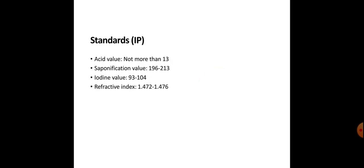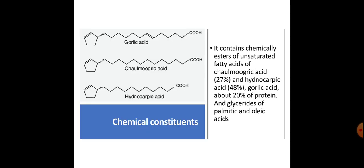It is slightly soluble in alcohol. Standards. Acid value: not more than 13. Saponification value: 196 to 213. Iodine value: 93 to 104. Refractive index: 1.472 to 1.476. Chemical constituents: it contains esters of unsaturated fatty acids — chaulmoogric acid 27%, hydnocarpic acid 48%, gorlic acid about 20%, protein and glycerides of palmitic and oleic acids.